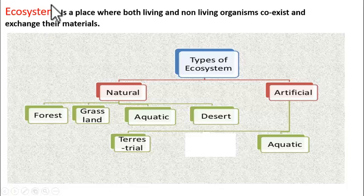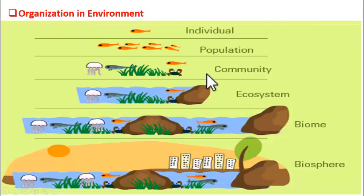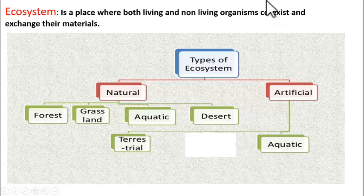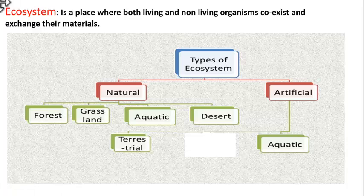What is an ecosystem? It is the community with its abiotic component. In other words, it is the place where both living and non-living organisms coexist and exchange their materials. So, ecosystem means living and non-living organisms existing together in one place, exchanging materials — that system is called an ecosystem.